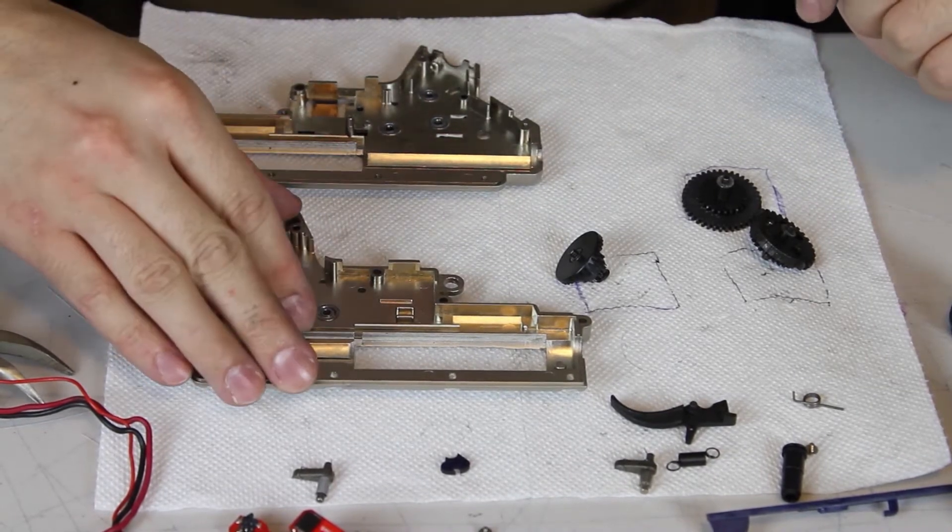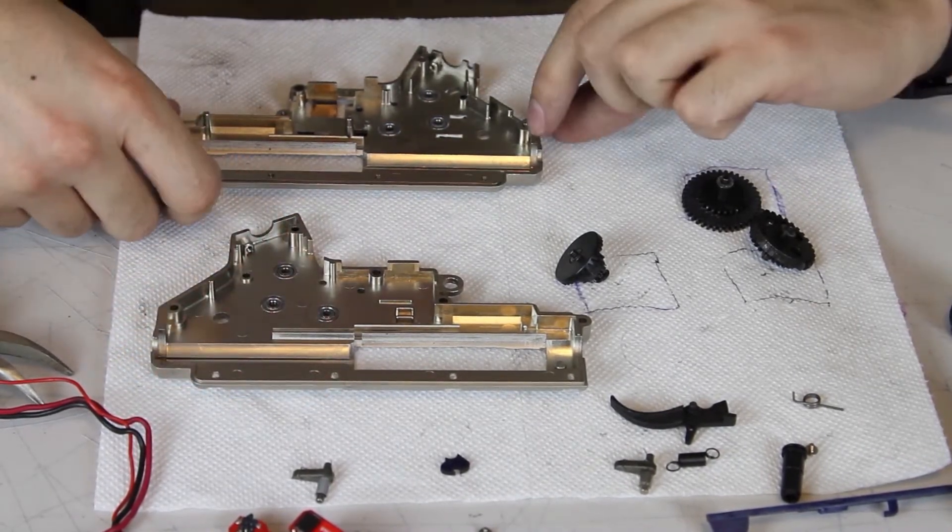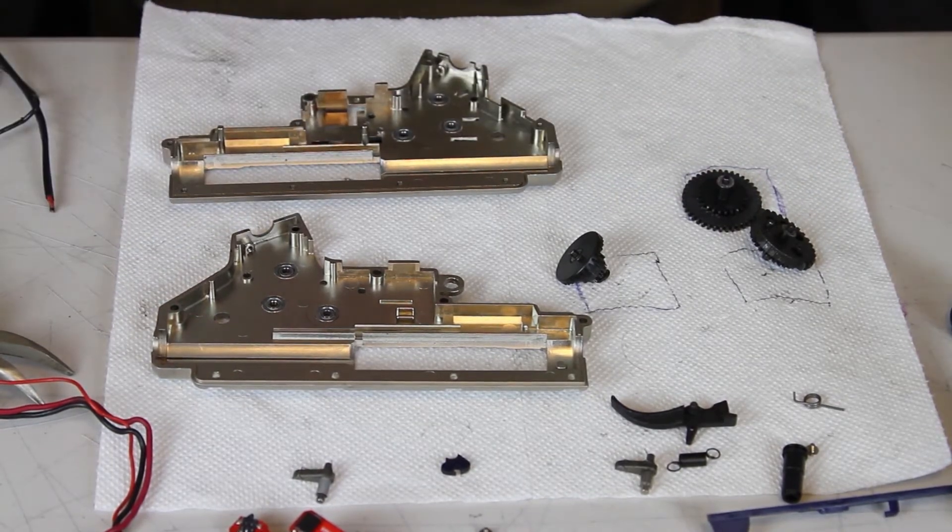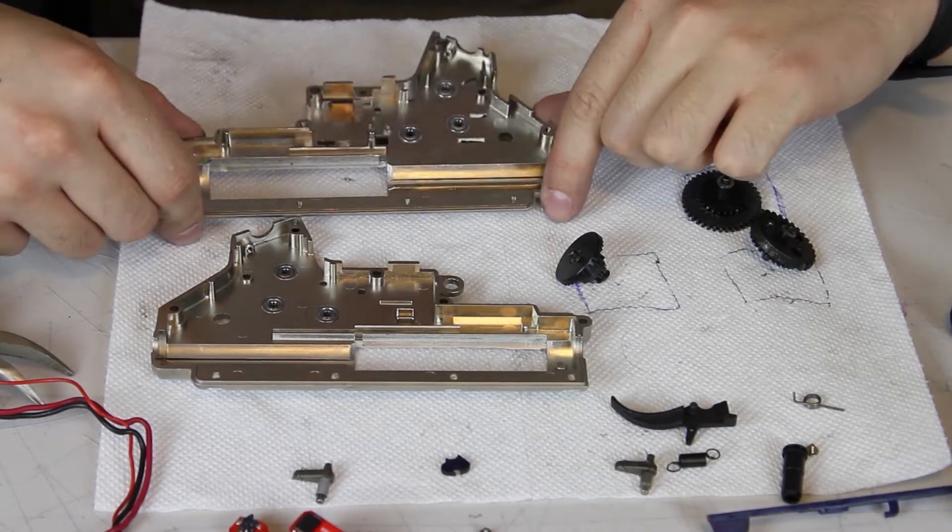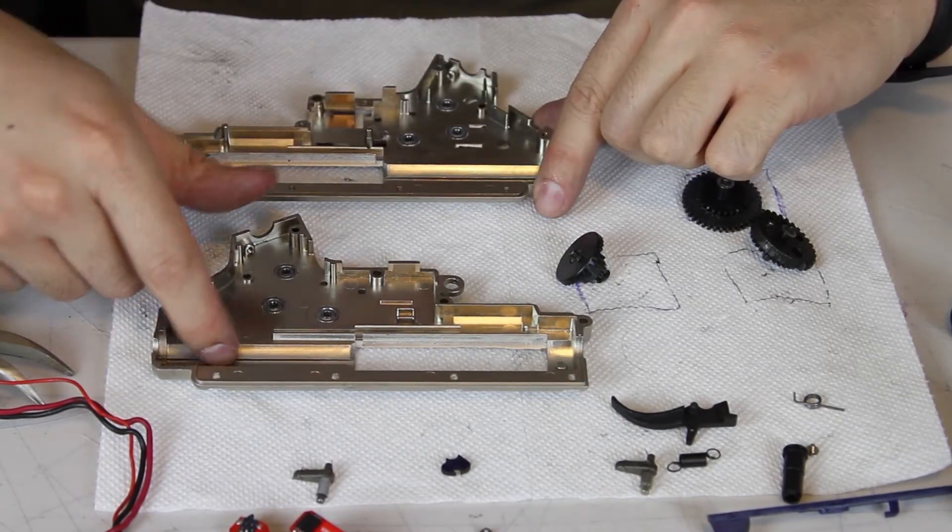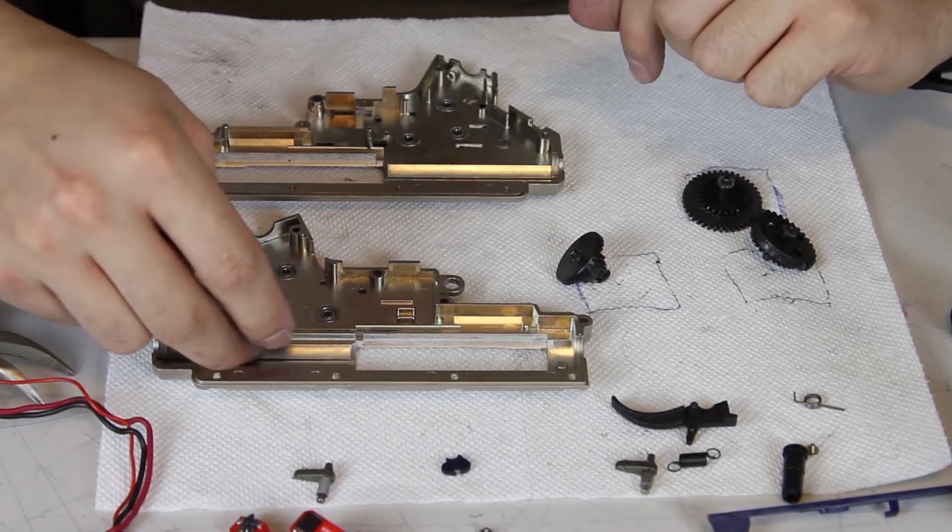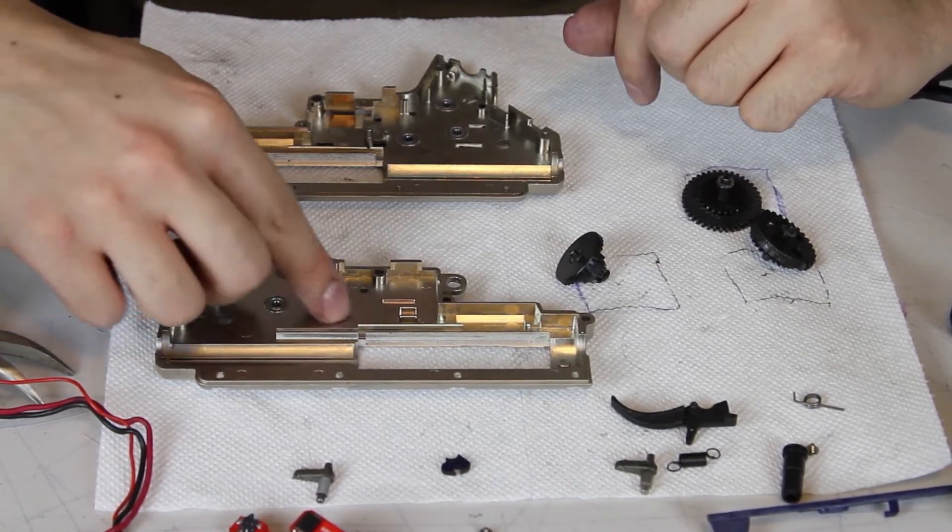Once you get the gearbox completely disassembled, you should give the gearbox shell a thorough cleaning. Quite likely the inside will be full of old grease and other debris, so take a clean piece of paper towel and really clean the inside until it shines. This will allow you to start fresh when you begin reassembly. If you are replacing any parts in your gun, you'll want to make sure they are ready at hand before you start reassembling.